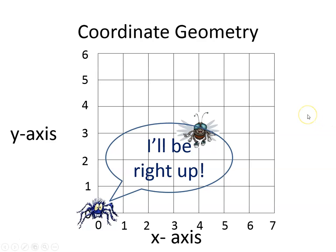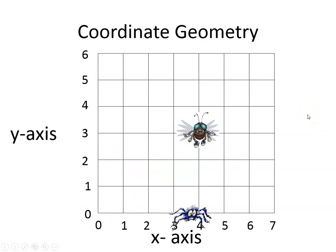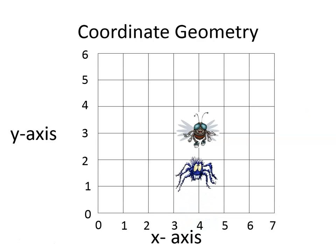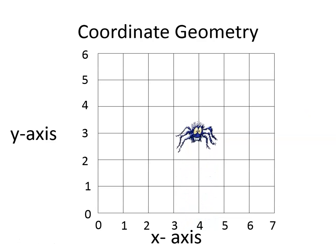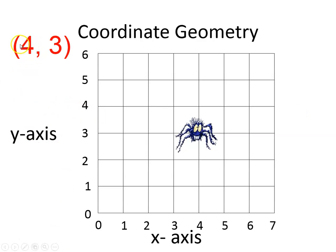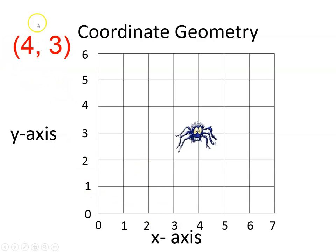So he goes to the right first: one, two, three, four, and then he goes up: one, two, three, and he got the fly. The spider is now at four comma three — four on the x-axis, three on the y-axis. This is an ordered pair; they have to go in that order.